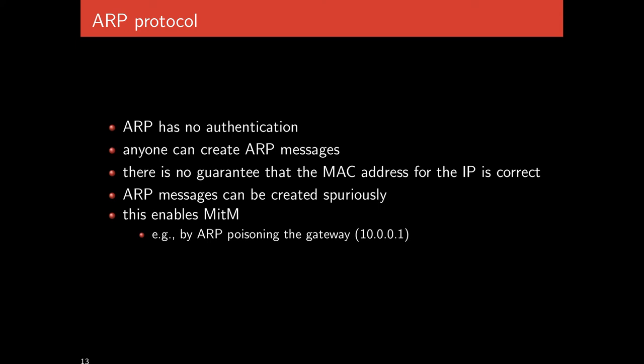ARP attacks are useful because they allow an attacker to become on-path. For instance, by poisoning the gateway — the machine computers talk to when sending traffic out onto the internet — you can change what Alice's machine thinks is the gateway to your own machine, so your machine receives all of Alice's outgoing traffic. TCP-level attacks are quite hard if you're off-path, confounded by things like sequence numbers, but trivial if you're on-path. ARP attacks, like DNS attacks, allow an off-path attacker to become on-path.